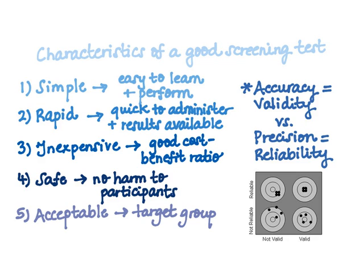To sum up: accuracy is how close a measurement is to the true value, and the lack of this is referred to as bias or systematic error. Whereas precision is how close the measurements are to each other, and the lack of this is referred to as random error.